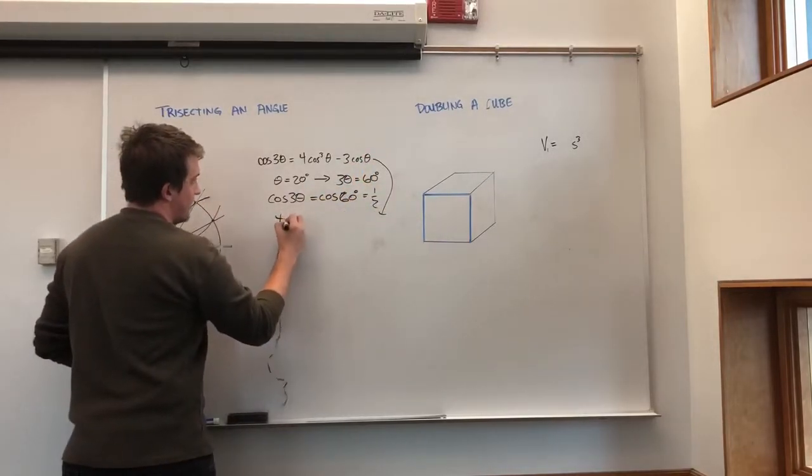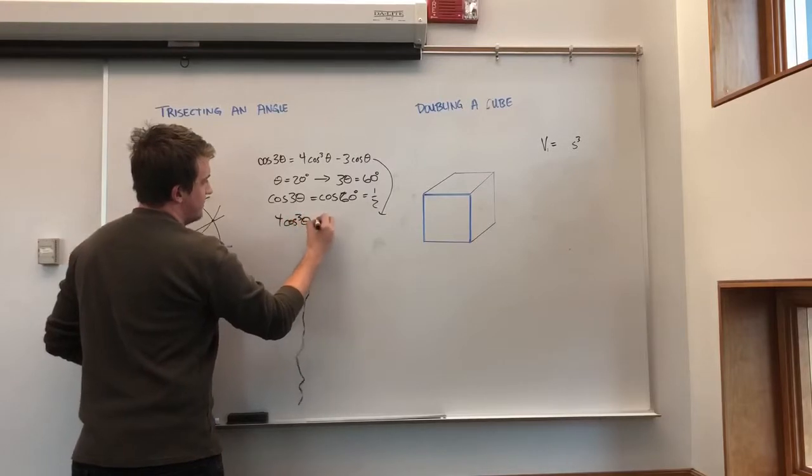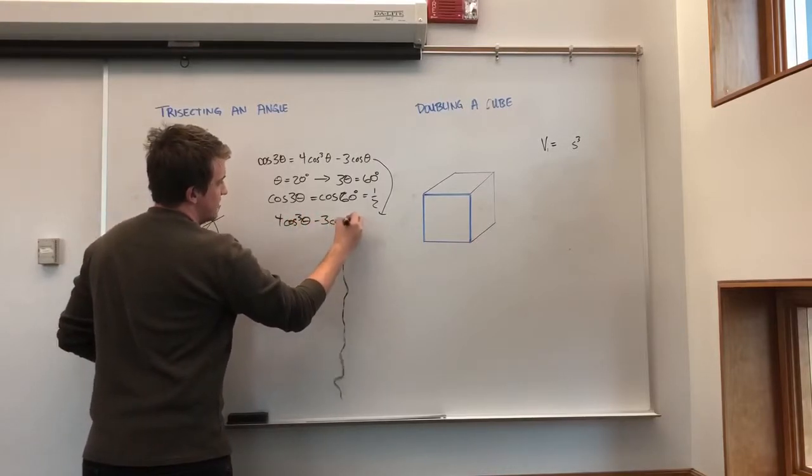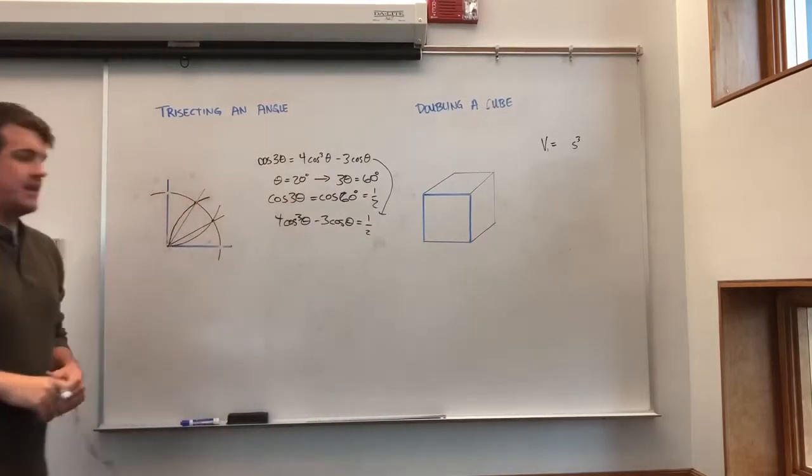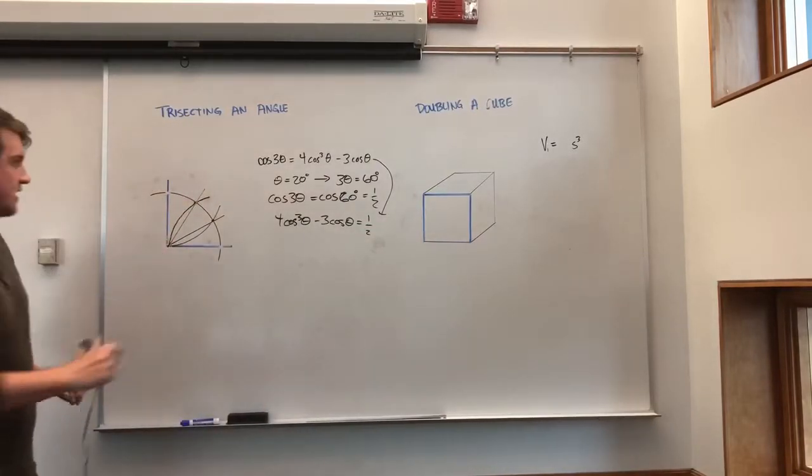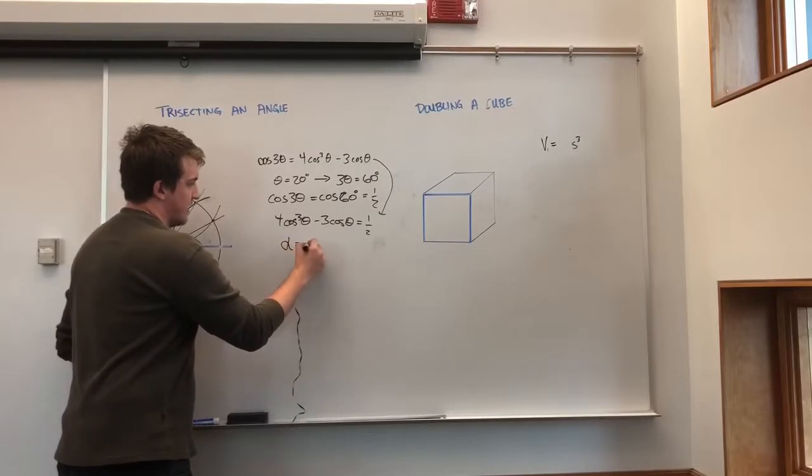we will get 4 cosine cubed theta minus 3 cosine theta, which is equal to 1 half. And now, let's make alpha equal to cosine theta.